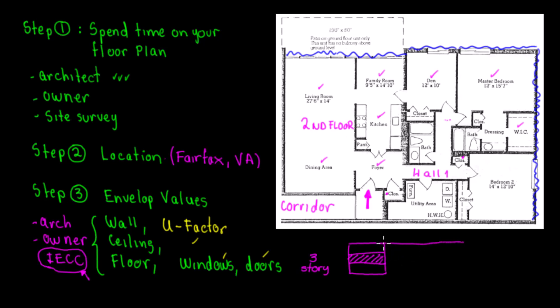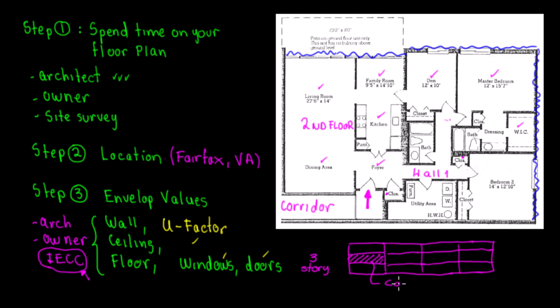The building is very long, like a T-shape, with multiple units. This is my condominium unit. It's important to distinguish: a condominium is owned, while an apartment unit is rented. Now that we understand the unit layout, we'll use this data for the heat load calculation in RightSoft, and we also need to verify the envelope values for this location.